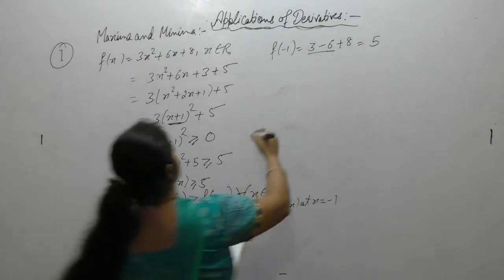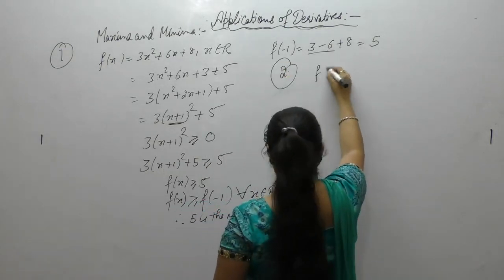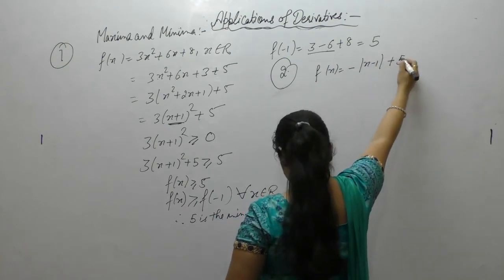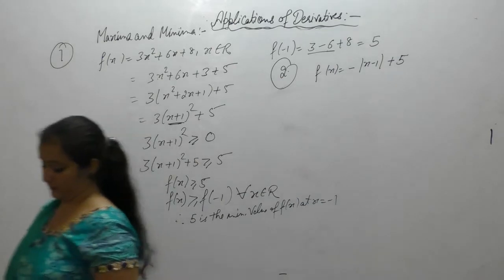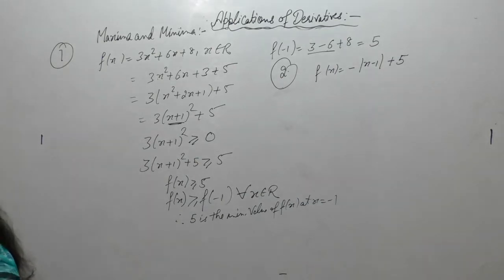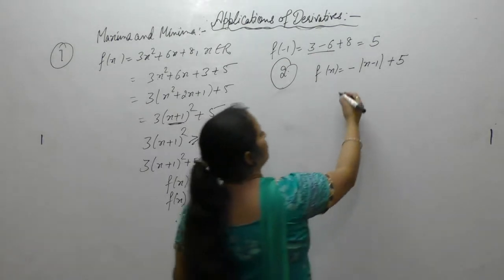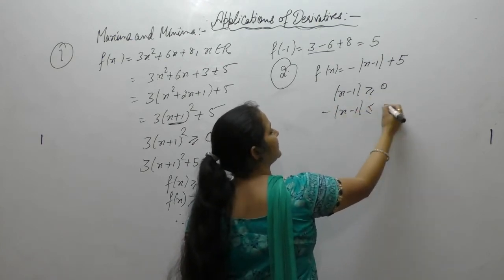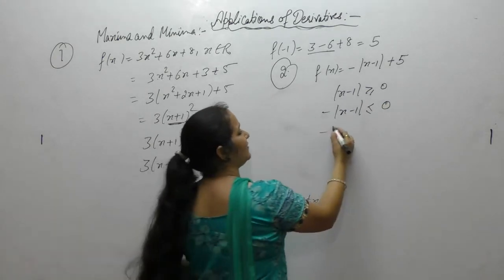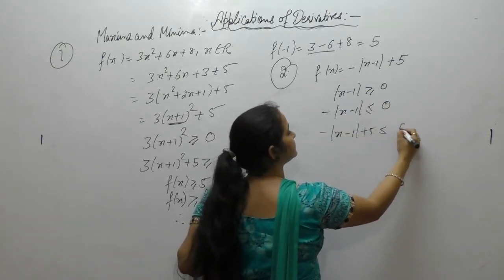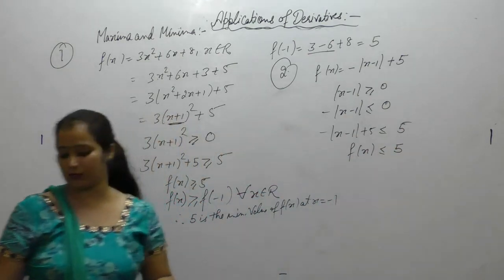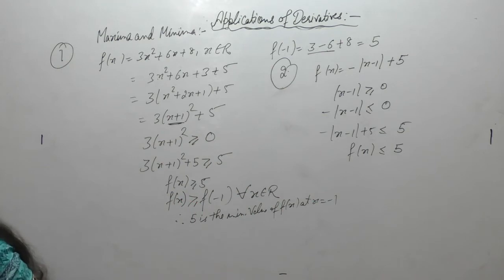Now the next function is f(x) equal to minus modulus of (x minus 1) plus 5, for all x belonging to real numbers. We know that modulus is always positive. When we multiply by negative, it becomes less than or equal to 0. Now adding 5 on both sides, the value of the function is less than or equal to 5 for all x belonging to real numbers.